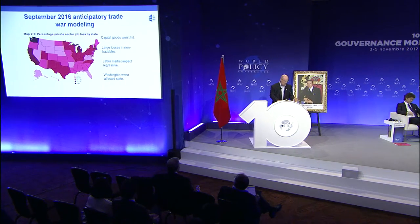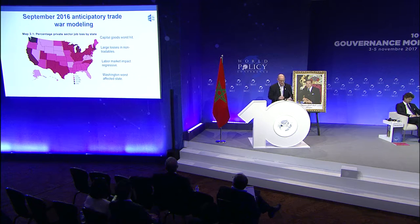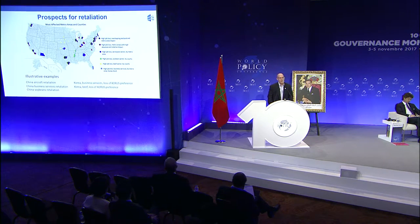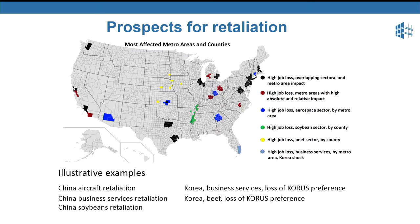The effects of a trade war in the United States would be regressive. Washington is the worst affected state. We also looked at some scenarios of asymmetrical forms of retaliation — things like China stopping buying aircraft, having an embargo on soybeans, or instructing state-owned enterprises not to buy U.S. business services. We've also looked at what might happen if KORUS were abrogated — that would include the loss of preferences in the beef market to countries like Australia, Canada, and New Zealand, which we expect would mean the elimination of U.S. beef exports at least in the short run, as well as loss of business services to EU competitors.